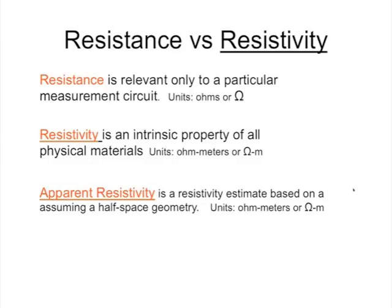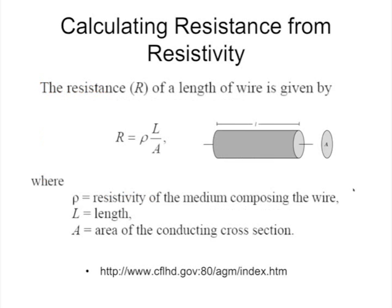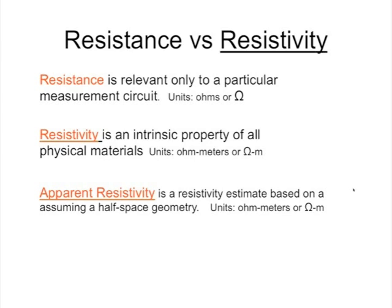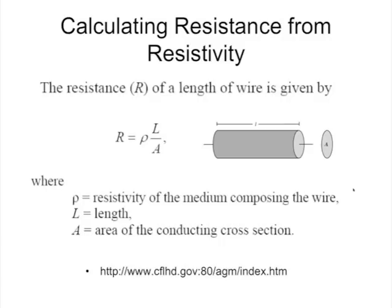Resistivity has units of ohm-meters — ohms times meters. Looking at a wire, we can calculate its resistance by taking the resistivity of the material the wire is made out of — that's rho, the Greek letter rho — and multiplying by the length of the wire and dividing by the cross-sectional area A. That gives us the resistance.